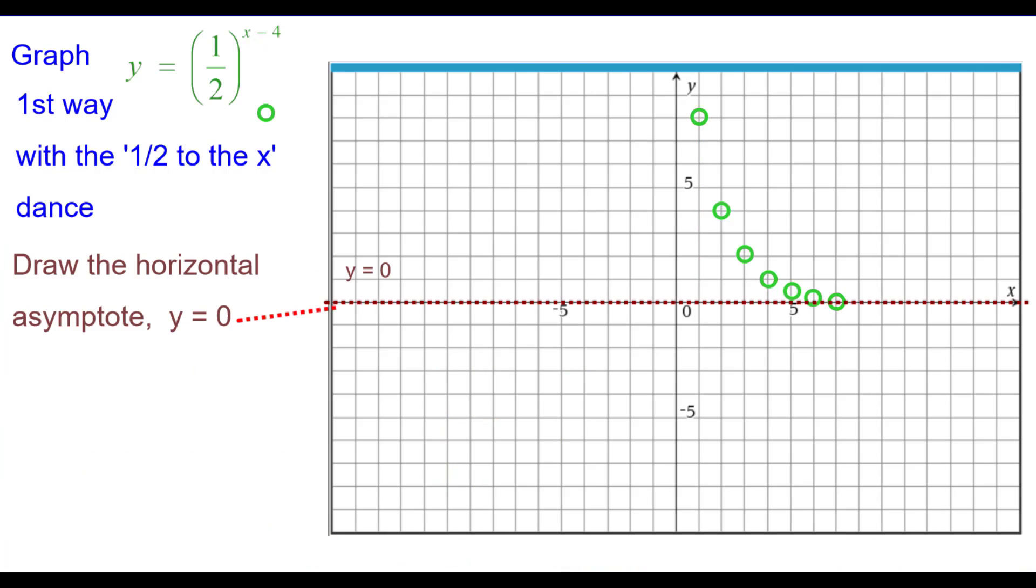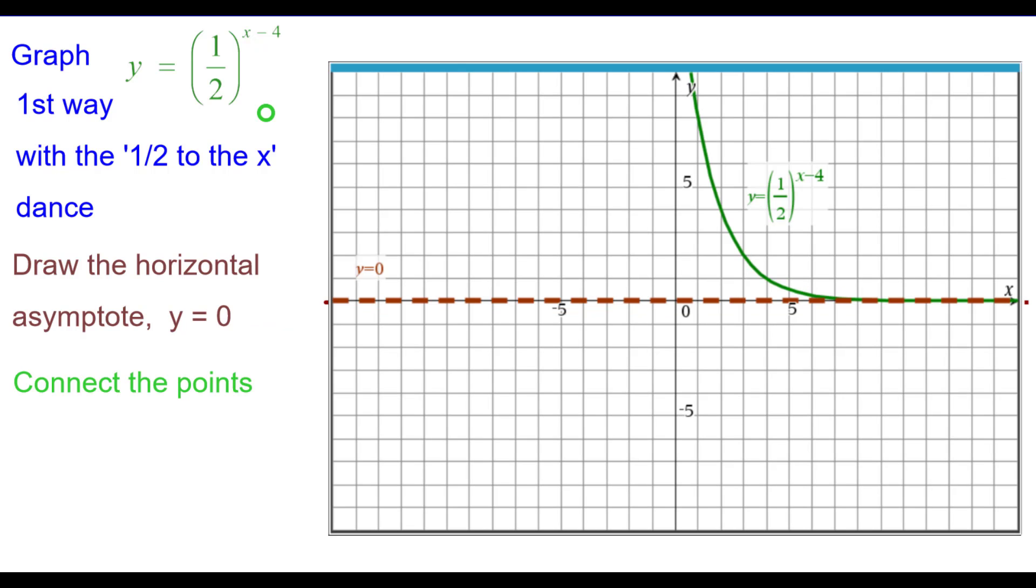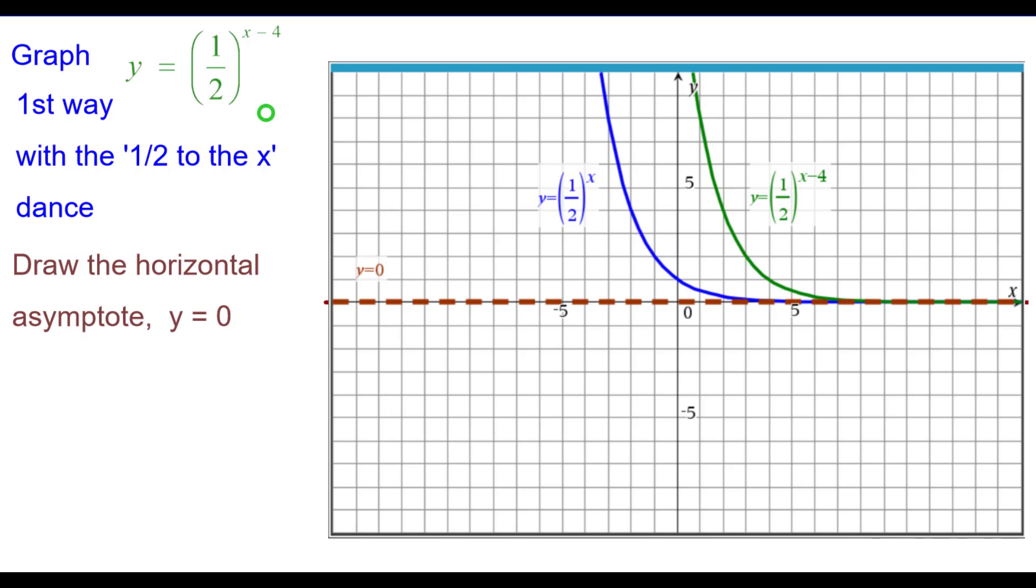The horizontal asymptote line is at y equals 0, or the x-axis. And we'll connect the points and get the curve. Comparing this to the parent function, we can see from the blue to the green, every single point is shifted to the right four units.